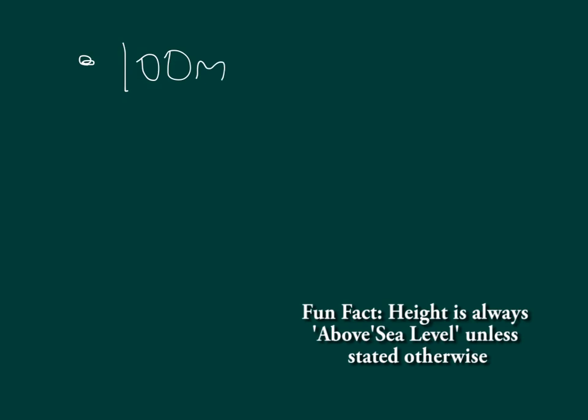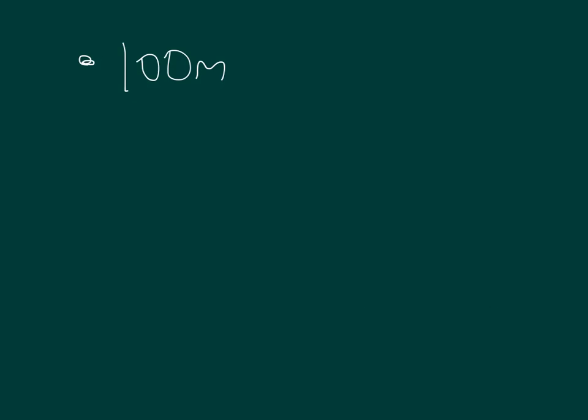Spot heights are very simple. It's a spot which tells you the height of something. That spot there is 100 metres above sea level. This spot over here is 8 metres above sea level. Simple, but it doesn't actually tell us much.